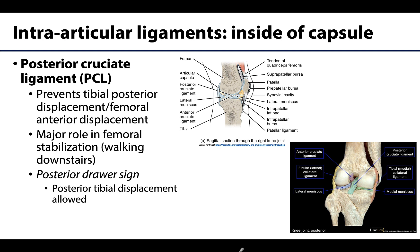The posterior cruciate ligament, or PCL, is the stronger of the two and does the opposite of the ACL. It prevents tibial posterior displacement and femoral anterior displacement. Too much posterior tibial displacement indicates likely PCL damage. Drawer tests assess whether the tibia moves too far anteriorly or posteriorly. In the weight-bearing flexed knee — such as when walking downhill or on stairs — the PCL is hugely important for stabilization of the femur.